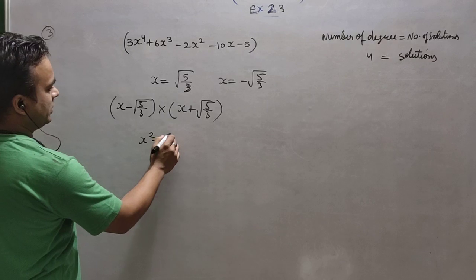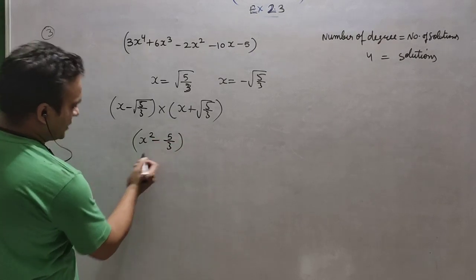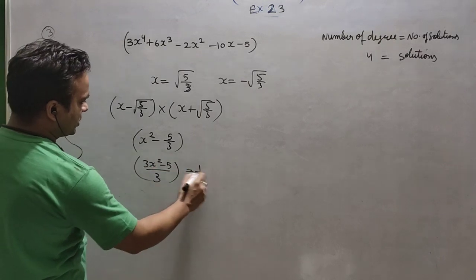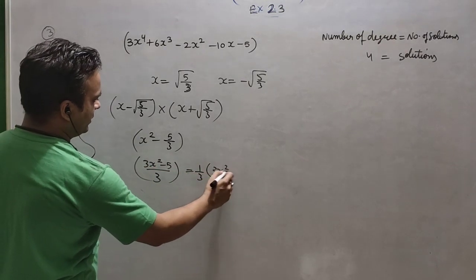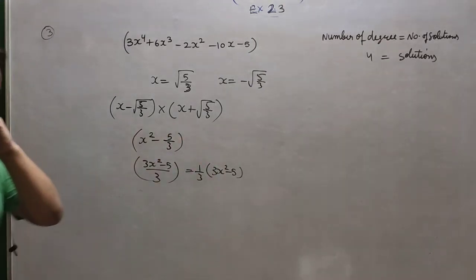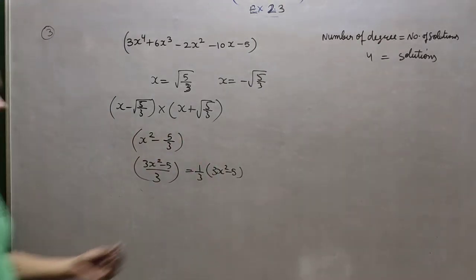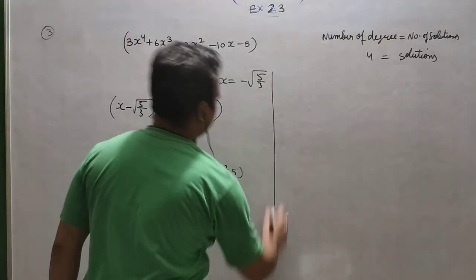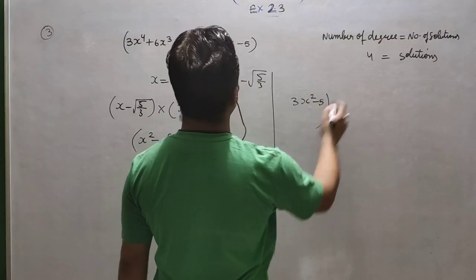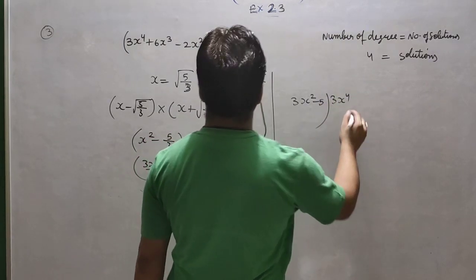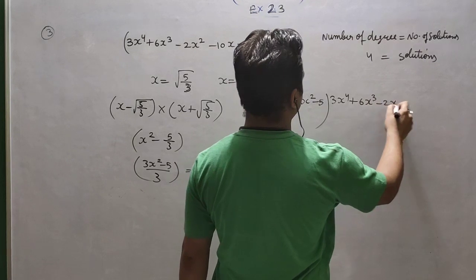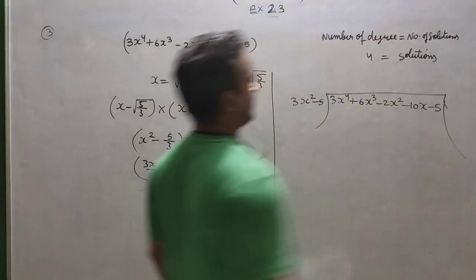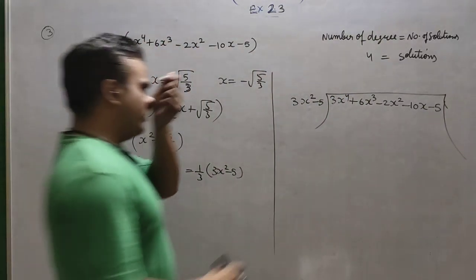That is why the pattern is: if I divide by the product of both factors, the product here is x squared minus 5 upon 3. In fraction form, what we can do is take 3 common — 3x squared minus 5 — and the 1 upon 3 will not affect the factor. This expression 3x squared minus 5 is responsible, so this will divide the polynomial. The procedure is the same as we did in question number 1.